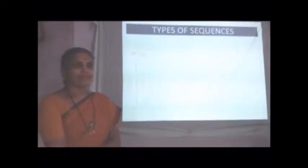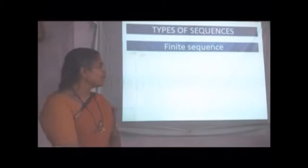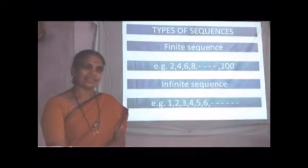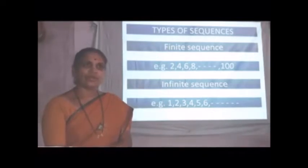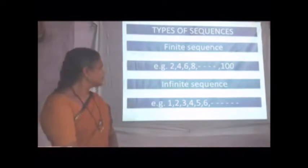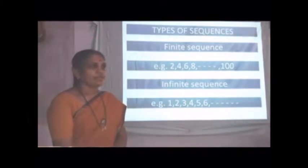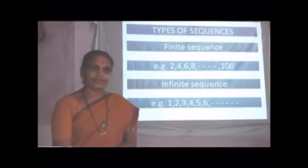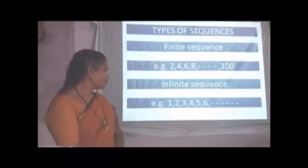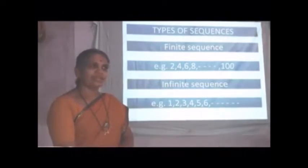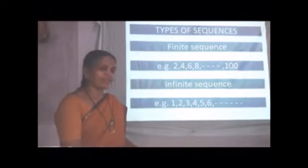Types of sequences. There are two types. Finite sequence and infinite sequence. When we know the terms in sequences, definite terms, how many terms are there, then it is finite. For example, the even natural numbers up to 100. This is an example. In infinite sequence, there is no limit of numbers. For example, 1, 2, 3, 4, that is set of natural numbers, is infinite sequence. So many examples are there. Observing only, we can say which are finite.